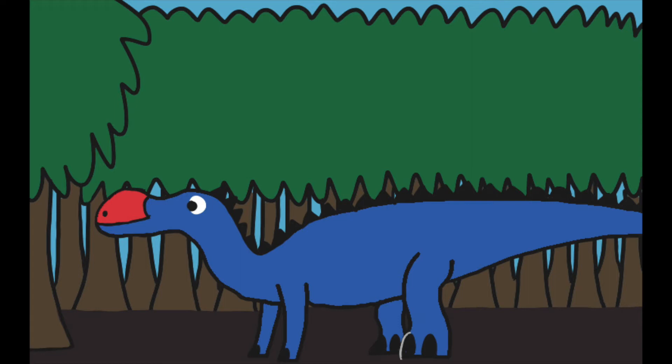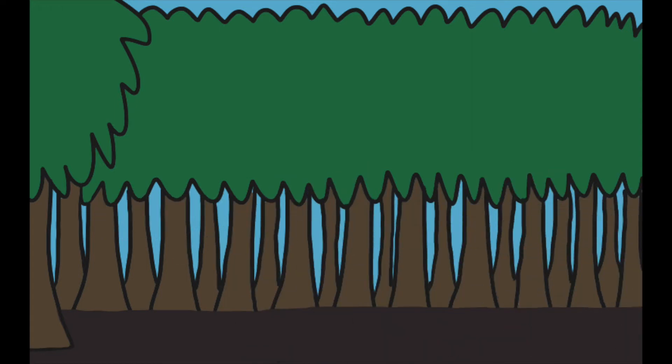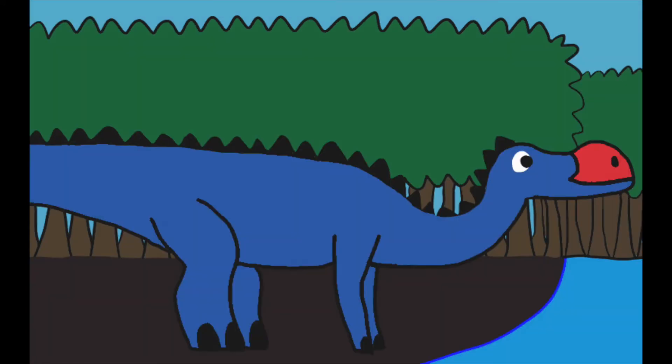Gryposaurus would probably roam in wetland ecosystems like swamps, marshes, river deltas, and even coasts. But these aren't the only places that the Gryposaurus could roam. They can even thrive in forests and other non-wet places.